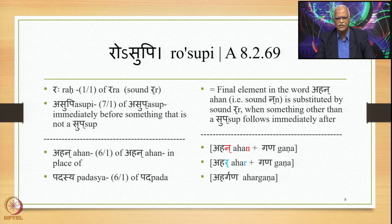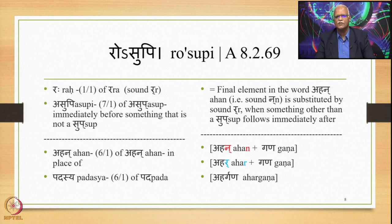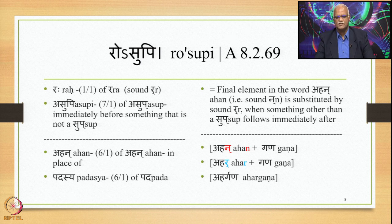Let us take up the Sutra Rosupi for study. Rosupi has got two Padas: Raha and Asupi. Raha is 1/1 of R, referring to the sound R. Asupi is 7/1 of Asup, which means something that is not a Sup, or other than Sup — so Asupi means immediately before something that is not a Sup. The words continued from the previous Sutras are Ahan (6/1 of Ahan, meaning in place of) and Padasya (6/1 of Pada).